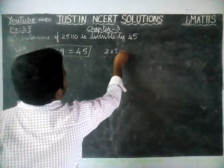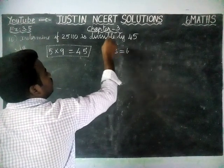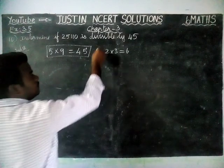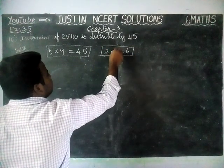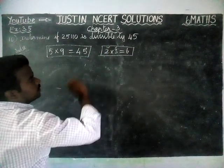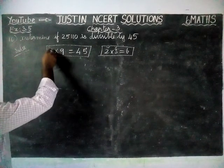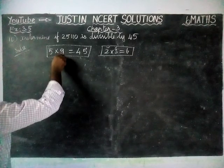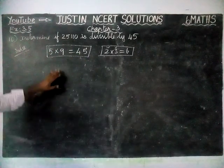This is similar to the rule where 2 into 3 equals 6. If a number is divisible by both 2 and 3, that number is divisible by 6 also — because 2 and 3 are co-prime numbers. We are applying the same concept here: 5 and 9 are co-prime numbers, so if a number is divisible by both 5 and 9, that number is divisible by 45 also.